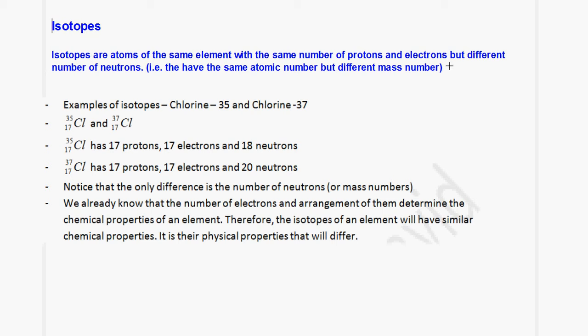An example of isotopes of chlorine: we have chlorine-35 and chlorine-37. Both have the same atomic number of 17, but their mass numbers are different — 35 and 37. Chlorine-35 has 17 protons, 17 electrons, and 35 − 17 = 18 neutrons. Chlorine-37 has 17 protons, 17 electrons, and 37 − 17 = 20 neutrons. So the two isotopes have the same number of protons and electrons but different numbers of neutrons.